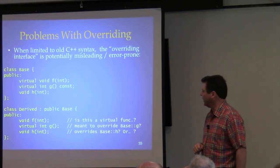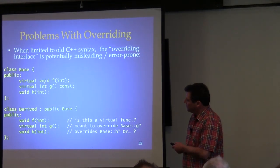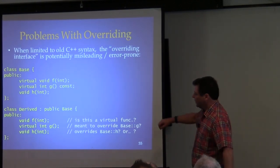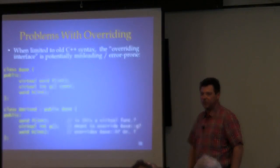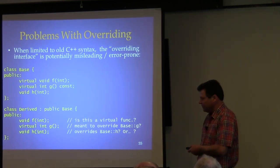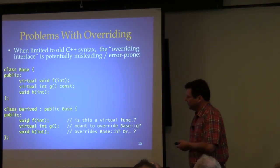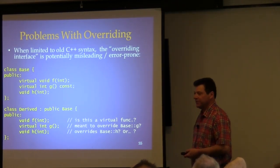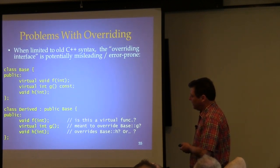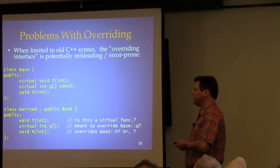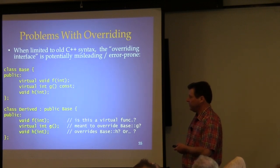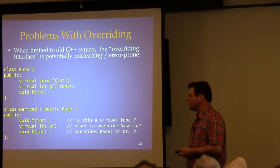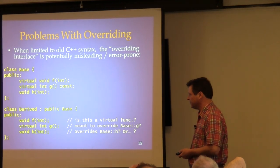Here is an old C++ class hierarchy with a base class where f and g are declared virtual, g is also const, and h is non-virtual. Then we have a derived class. In old C++, there's a lot of potential confusion. If you're just looking at the derived class code, how do you know if f is virtual or not? You don't — you have to know if it's virtual in the base. That's confusing.